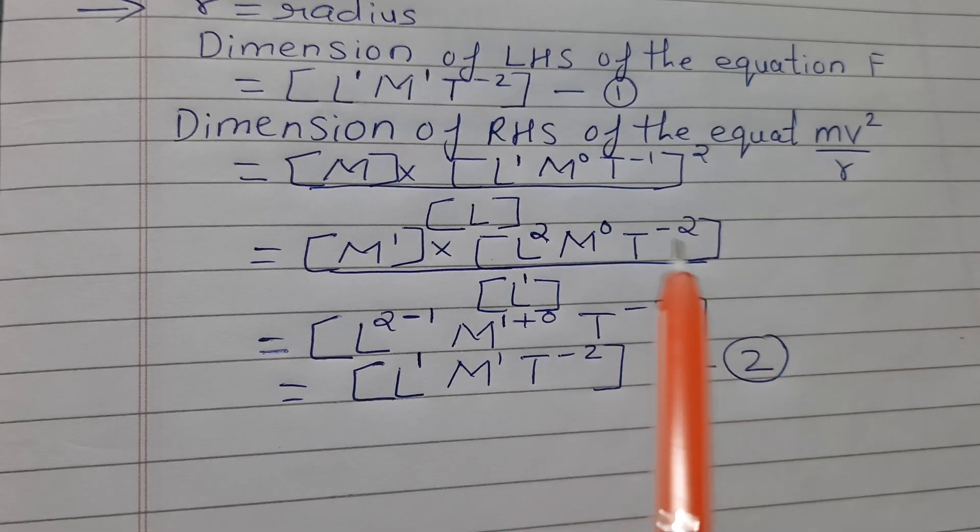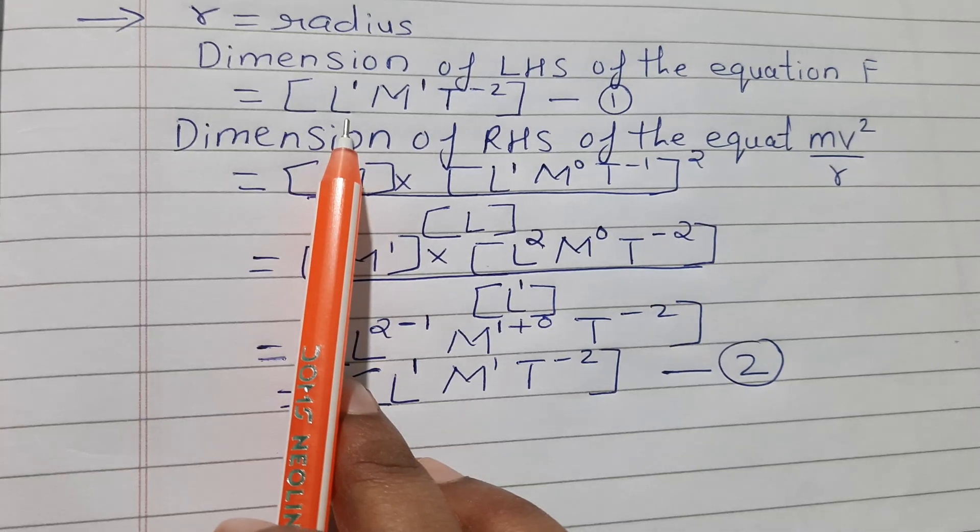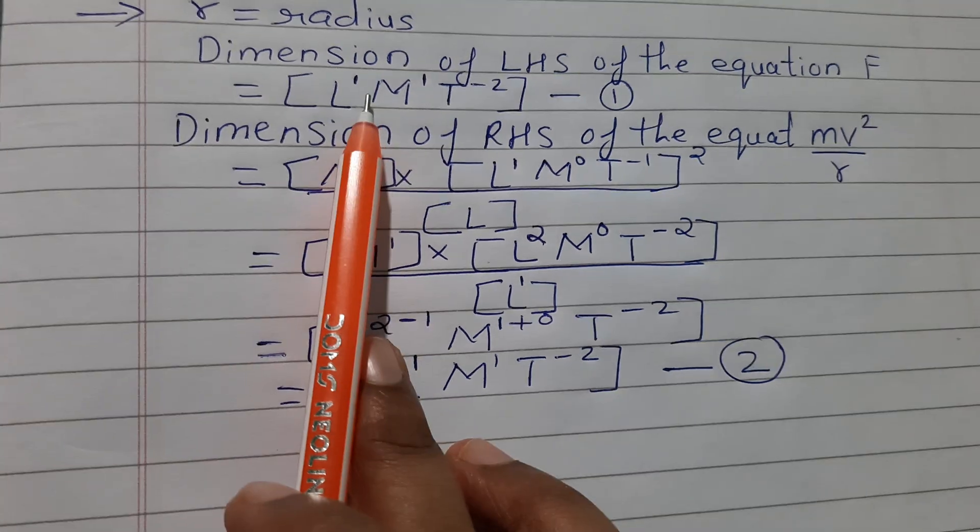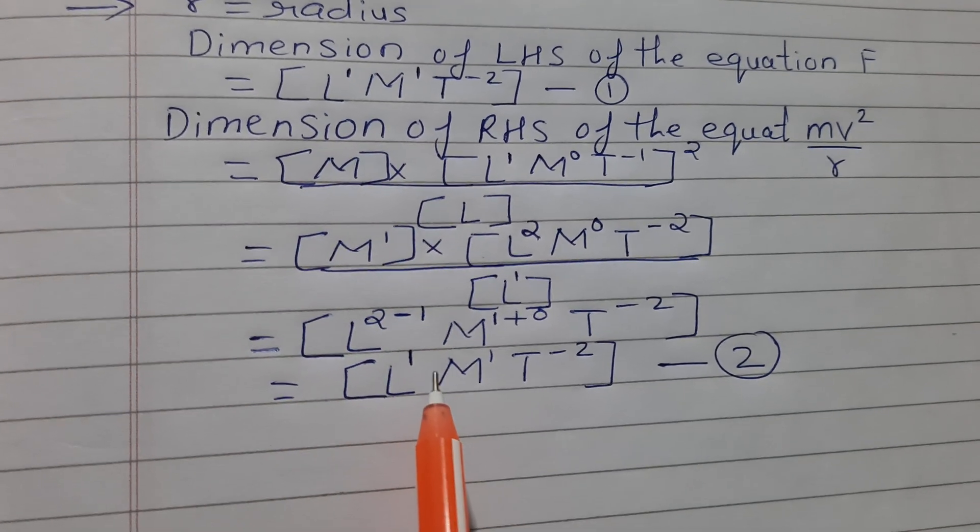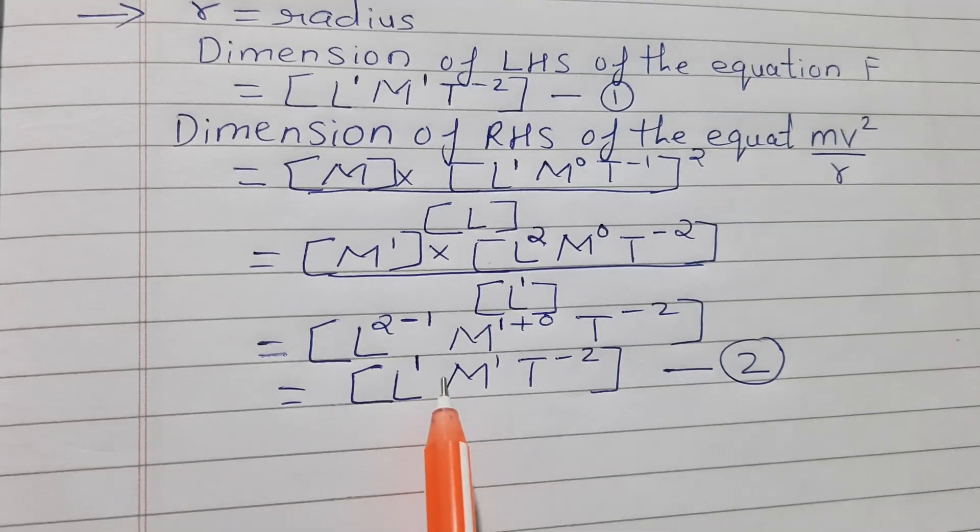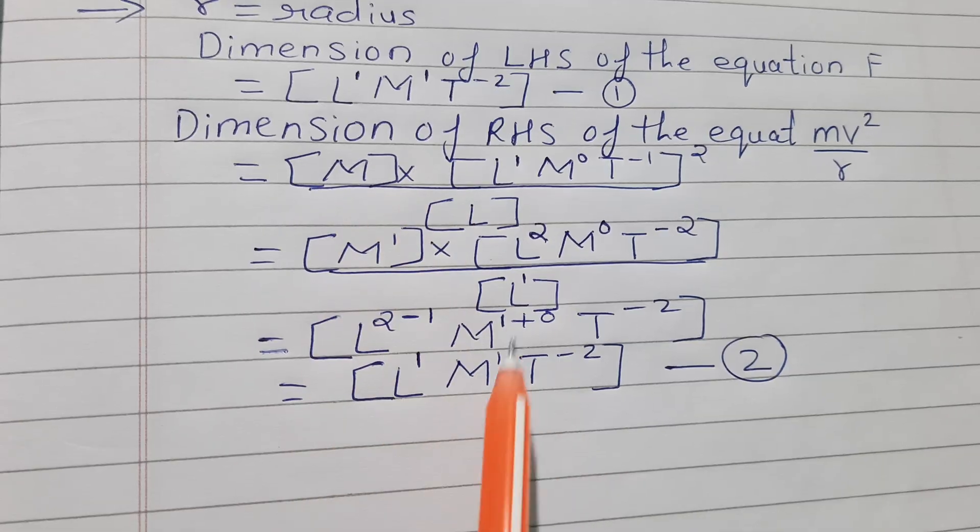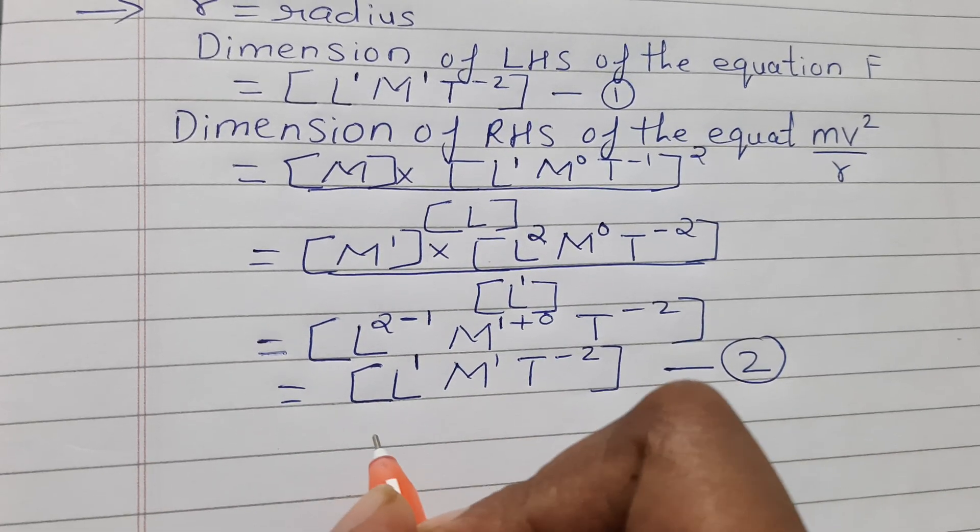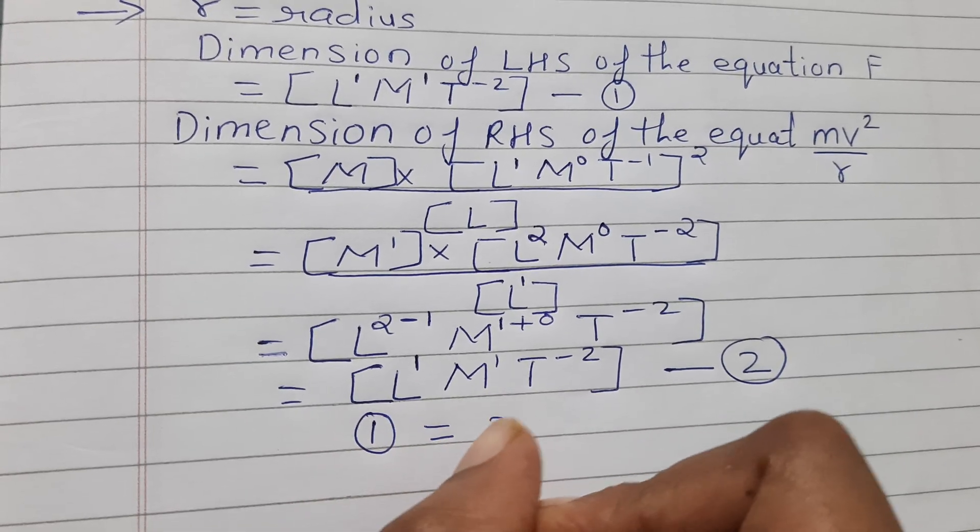Now see equation 1. In equation 1, l raised to 1, here also l raised to 1. m is 1, mass is 1, t is minus 2. So 1 equals 2.